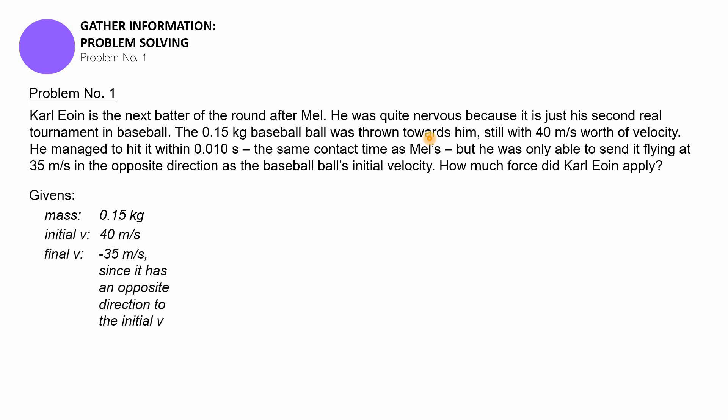Why is it negative? Very good - it's opposite the direction of the first velocity, which was positive 40 meters per second. So since it was hit by the baseball bat towards the opposite direction, it's negative 35.